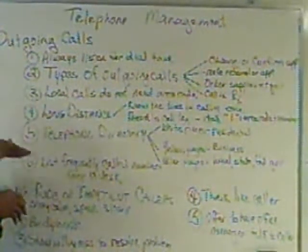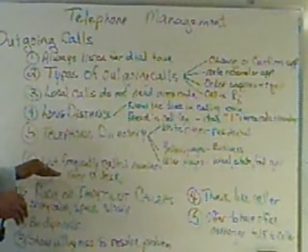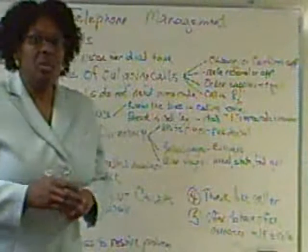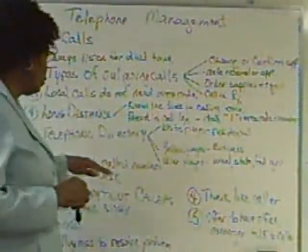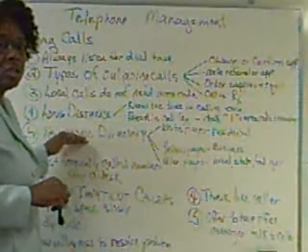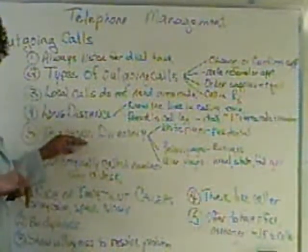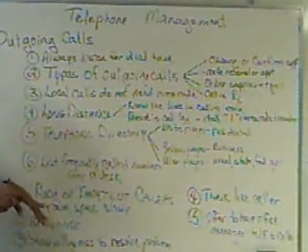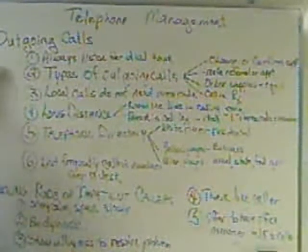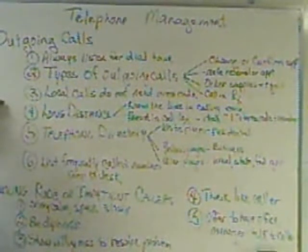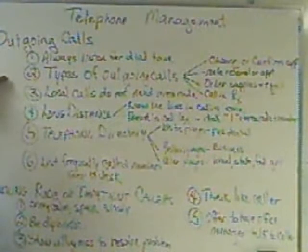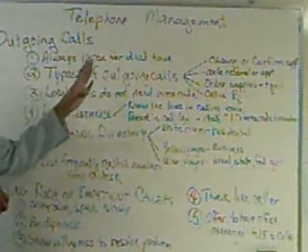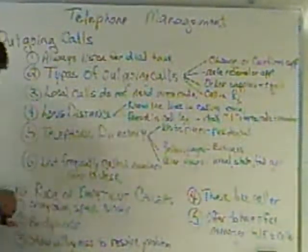Also, with outgoing calls, what you want to do is keep a list of the frequently called numbers at your desk. These are the frequently called numbers by your medical practice. This just makes it easier for you to locate those numbers because you're calling them all the time. When you are making an outgoing call, again, be prepared. Have your information there with you.